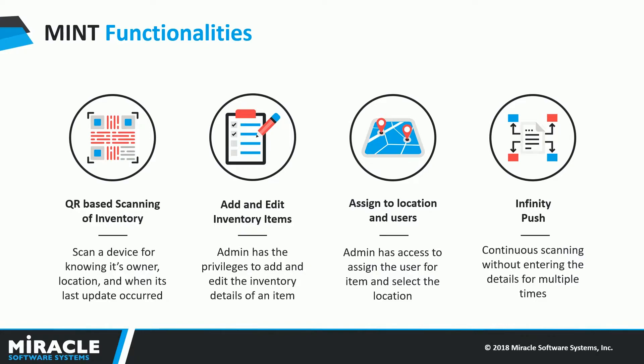A user can scan a QR code and get information about an item. An administrator can scan a new QR code and add an item to our digital inventory by assigning location and users. Another great feature that our app houses is termed as Infinity Push — bulk orders of equipment can be added into our digital inventory in a matter of seconds by continuously scanning for items. This will surely make our life very simple and help us find the right equipment at the right time.